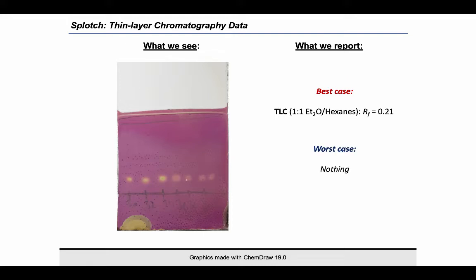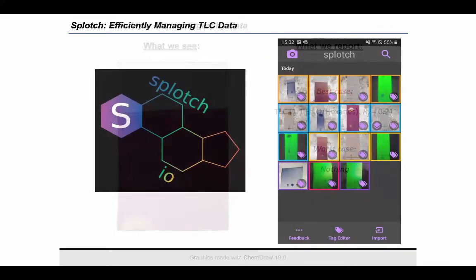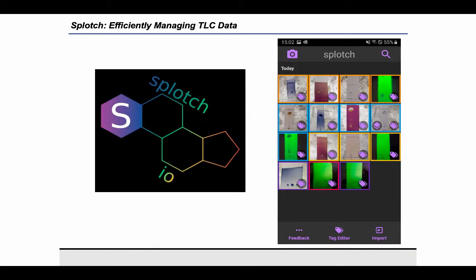Sometimes the data is lost altogether, as many chemists do not report TLC data. To deal with these challenges, we've created Splotch. Splotch is a free Android app that makes it easy to organize, annotate, and we hope eventually to publish your photographic TLC data.